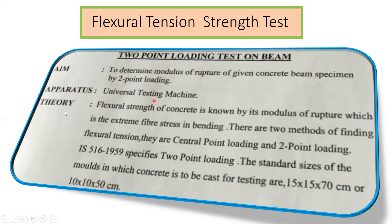Flexural strength of concrete — flexure means bending — is known by its modulus of rupture, which is the extreme fiber stress in bending. There are two methods of finding flexural tension: central point loading and two-point loading. Indian Standard IS 516:1959 specifies two-point loading. The standard mold sizes used for this test are 150mm × 150mm × 700mm or 100mm × 100mm × 500mm.